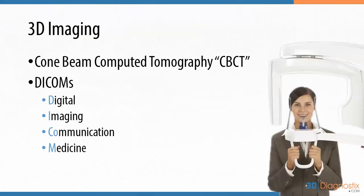Starting with 3D imaging — what are the images we need? Conebeam CT. If you have a Conebeam machine in your office, you'd scan your patient and get DICOMs. If you don't have a machine, you refer the patient out to a scanning center, which would scan the patient and provide you with DICOM data. Those DICOMs would then be imported into the software so you can manipulate and plan.